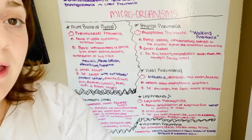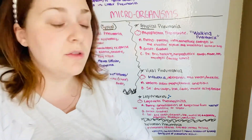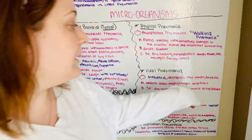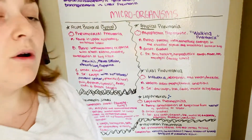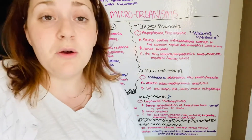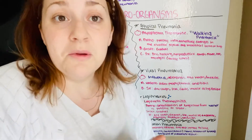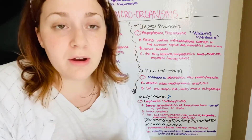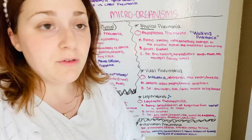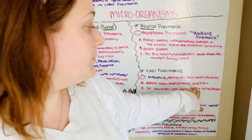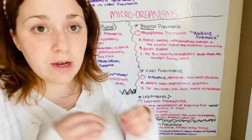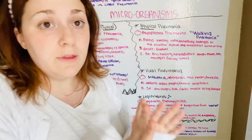Viral pneumonia — when you think viral, think virus. It's first going to be caused by influenza or adenovirus, and can also be caused by herpes or measles. This one is more going to be seen in the community. It affects older people or people with chronic conditions. You first get influenza, and then it can spiral into this type of pneumonia.